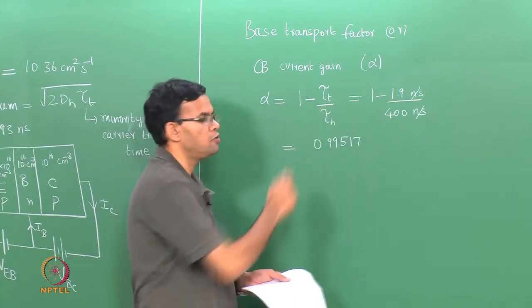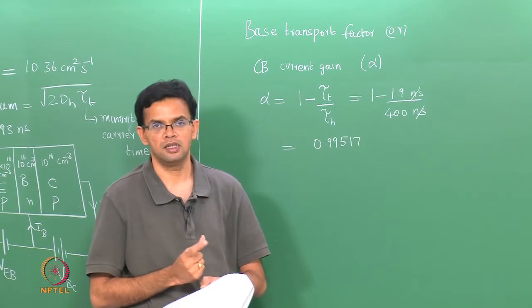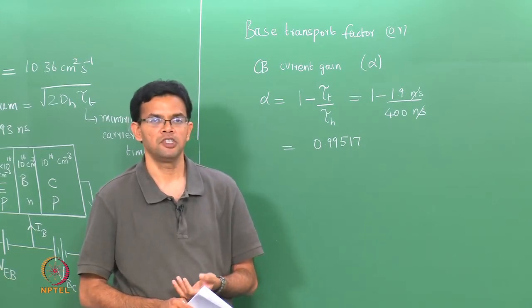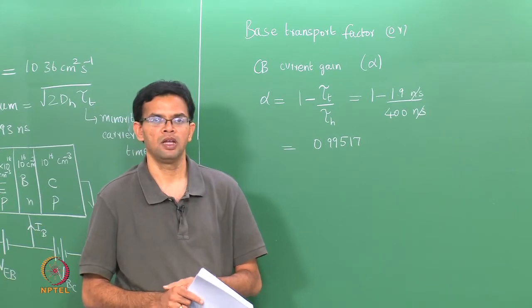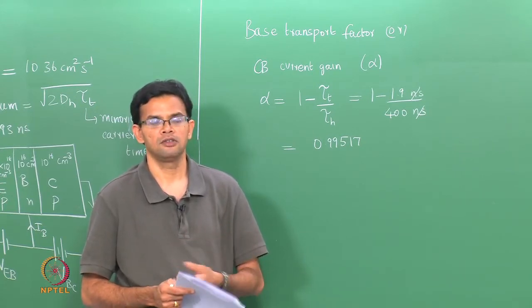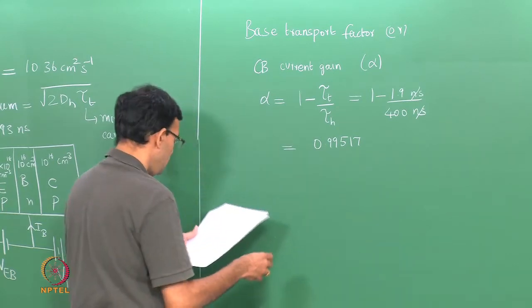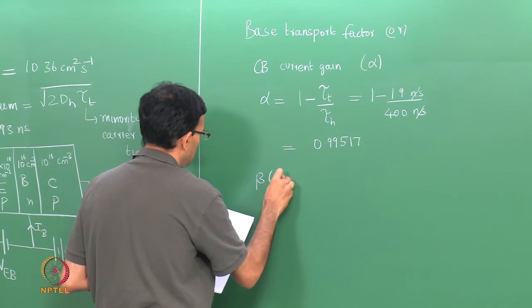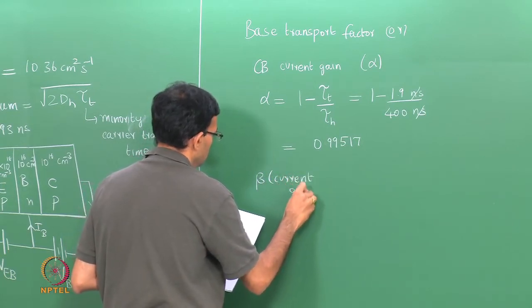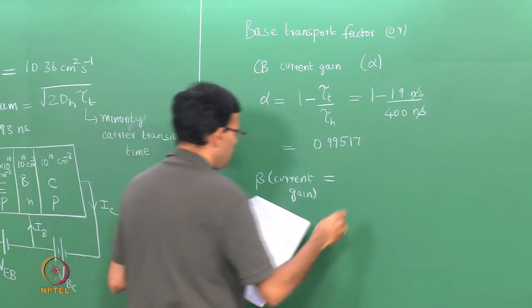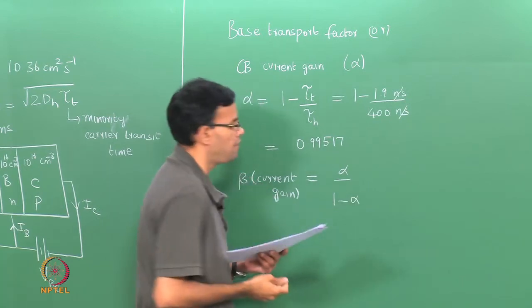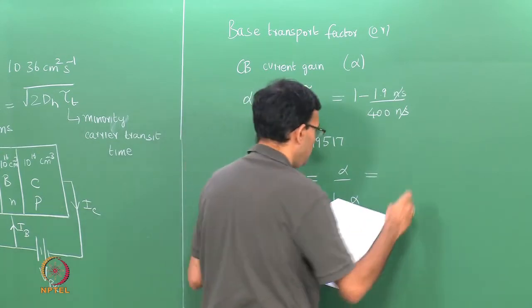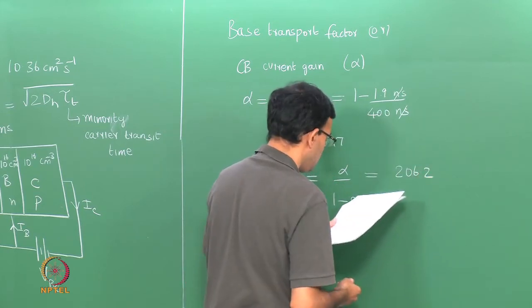One way to increase alpha is to reduce the transit time — you can do this by making the base thinner. Another way is to have a higher value of τ_h, the minority carrier lifetime, which you can achieve by reducing the doping concentration in the base. Alpha is 0.99517. We also want to calculate the current gain beta, which is defined as alpha/(1 − alpha). Substituting the values, beta comes out to be 206.2.